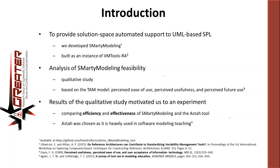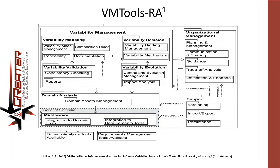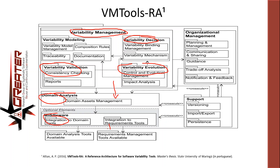We try to provide a solution space automation to support UML-based SPLs, so we developed the smart modeling environment. This environment was built as an instance of the VM Tools RA reference architecture. In the general architecture of VM Tools we have the variability management package with variability decision, variability evolution, variability validation, domain analysis, and middleware providing communication between packages responsible for domain analysis tools and requirements management tools. We also have a package for organizational management and support for versioning, importing, exporting, and persistency of models.